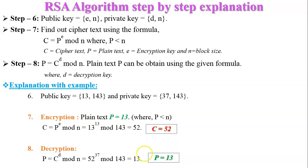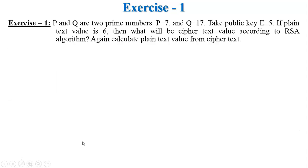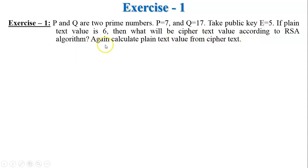Now perform this exercise. Exercise number one: p and q are two prime numbers with values 7 and 17, and e equals 5 as the public key. If the plaintext value is 6, what will be the ciphertext according to the RSA algorithm? Then also calculate the plaintext value back from the ciphertext.